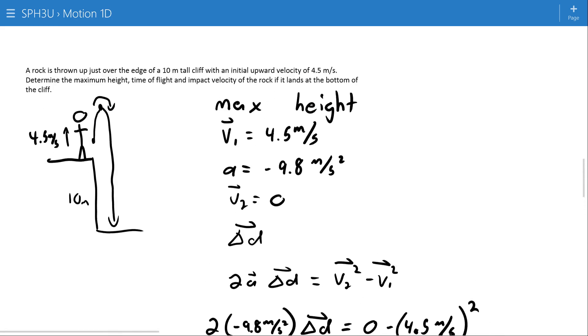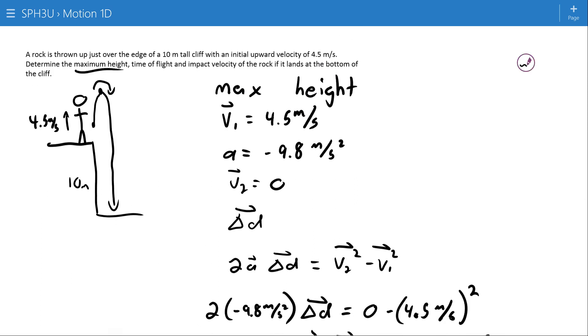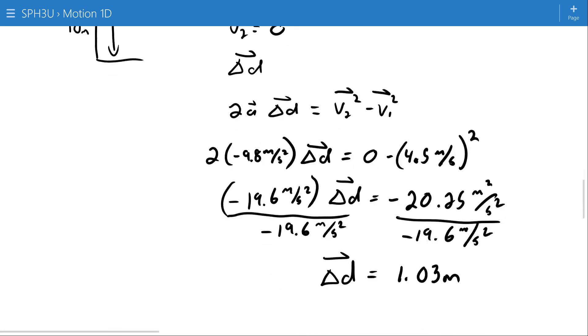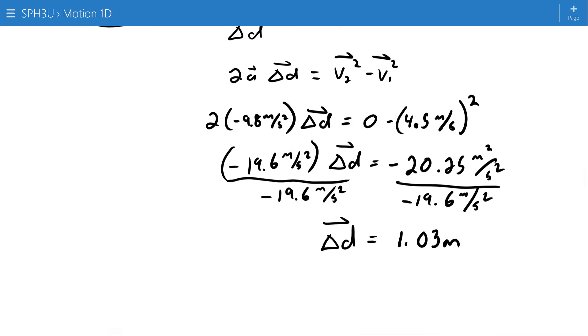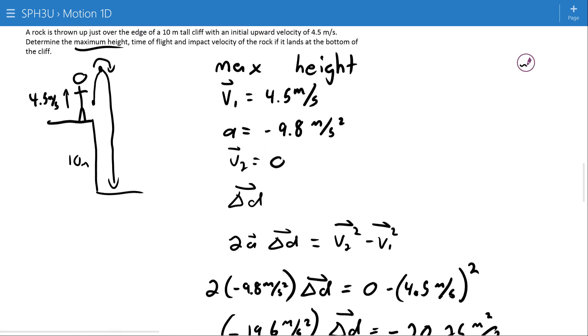Now, on a test or a quiz or something like that, the question might say determine the maximum height from the top of the cliff, from the bottom of the cliff. So you need to read carefully and make sure that however you state this as a final answer is in agreement with that. So if it was from the top of the cliff, then your 1.03 meters is fine. But if it says from the bottom of the cliff, then don't forget to add in the 10 meters of the cliff. Because what we really found right here is this displacement right here.